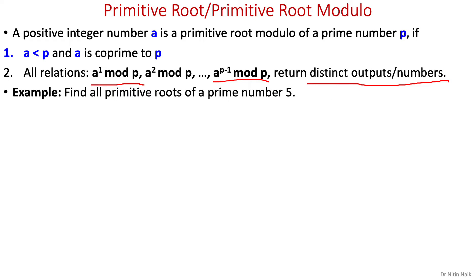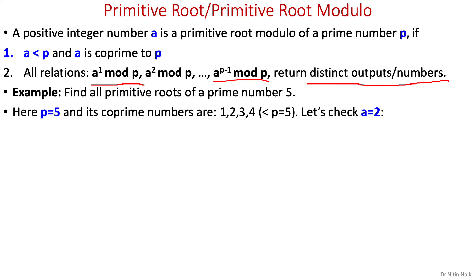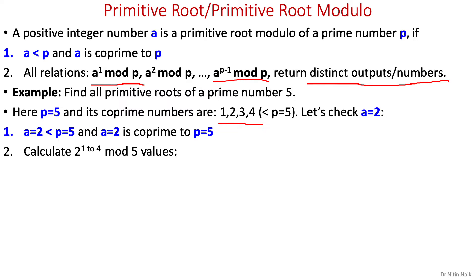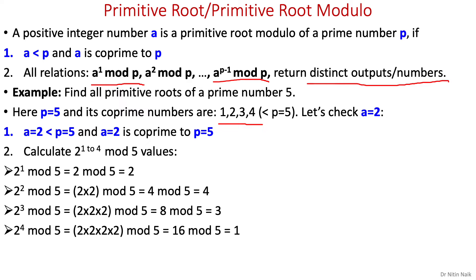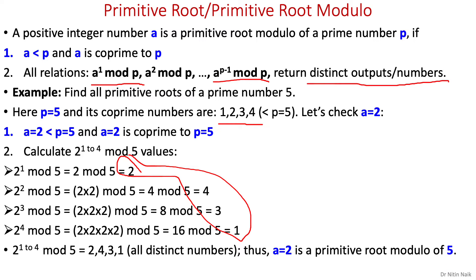Let's look at an example: find all primitive roots of the prime number 5. First, find all co-prime numbers to 5, which are 1, 2, 3, 4. Let's check a equals 2. Condition one: 2 is smaller than 5 and 2 is co-prime to 5. Condition two: 2¹ mod 5 = 2, 2² mod 5 = 4, 2³ mod 5 = 3, 2⁴ mod 5 = 1. All outputs are different, so 2 is a primitive root modulo of 5.